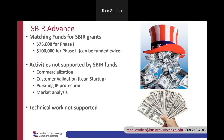Our most significant program is SBIR Advance — a matching grant for companies with a funded Phase 1 or Phase 2 grant already underway. We provide up to $75,000 for Phase 1 and up to $100,000 for Phase 2, and you can return twice for Phase 2 matching for a total of $200,000. Federal SBIR funds are intended for technology and scientific research, not commercialization. SBIR Advance fills that gap — covering IP and patent work, market analysis, and customer validation activities. Technical work is generally not supported; we fill in the commercialization gap.